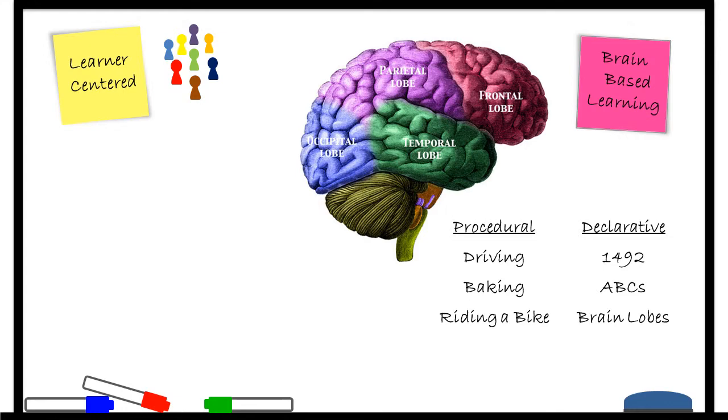Sing to the farmer in the dell: there are four lobes in the brain, four lobes in the brain, occipital, parietal, frontal, temporal. Occipital controls the sight, occipital controls the sight. You get the picture.